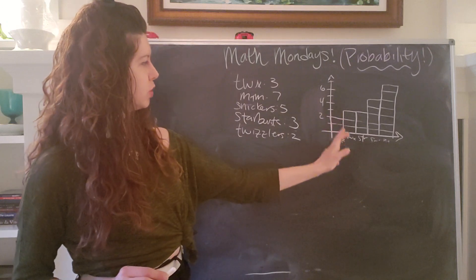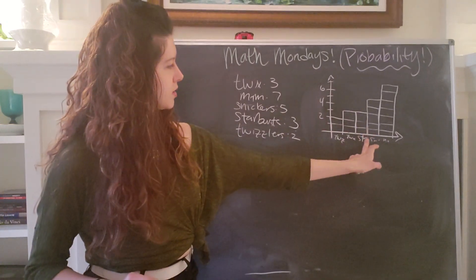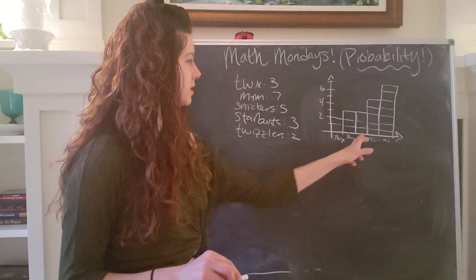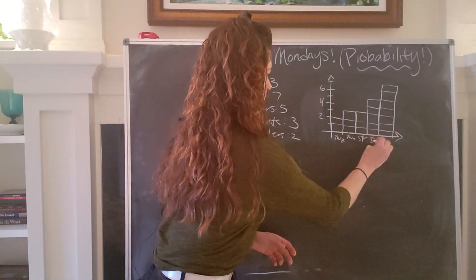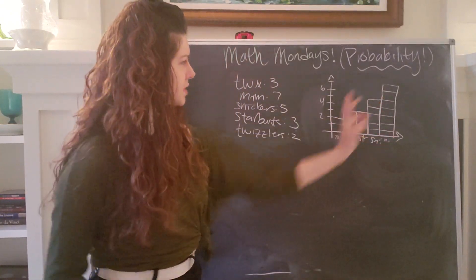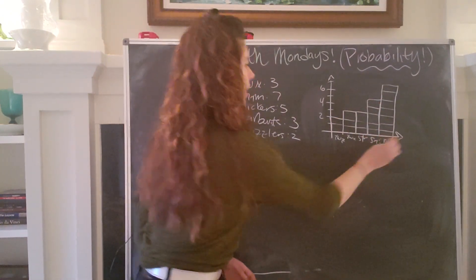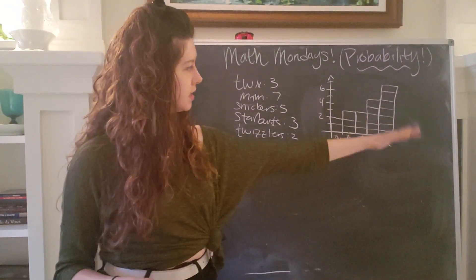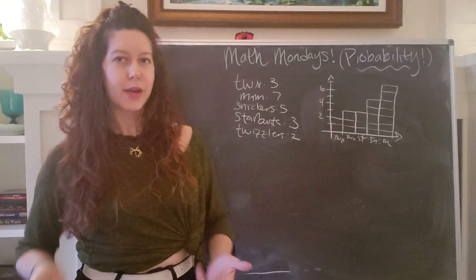So we have Twizzlers, which is two, Twix, three, Starburst, which I'm writing STR for short, because I want to be lazy and also save space. And then we have Snickers SNI at five and we have seven M&Ms. So right off the bat, having a picture is really, really handy because we can see what we're working with.